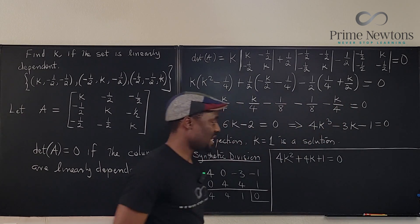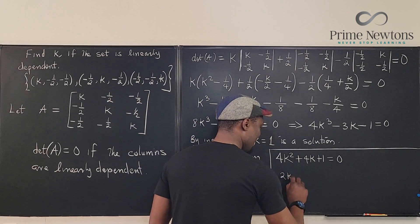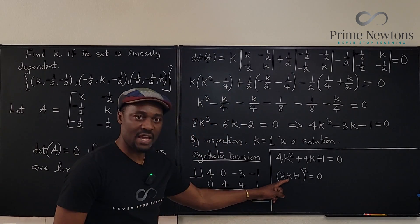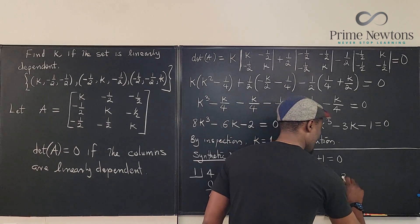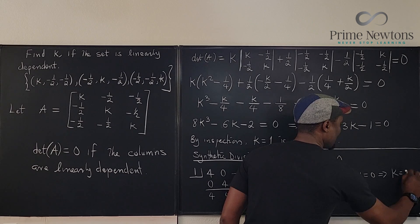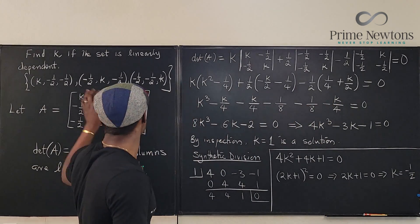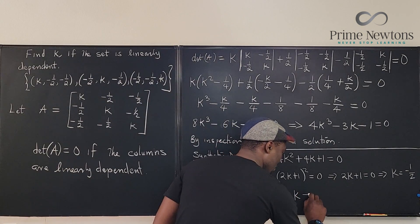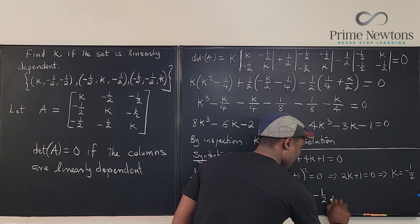We now have four k squared plus four k plus one equals zero. This is clearly a perfect square: (2k + 1) squared equals zero. Solving for k gives 2k + 1 = 0, so k equals negative one half. Therefore, the two possible values of k are k equals negative one half and k equals one.